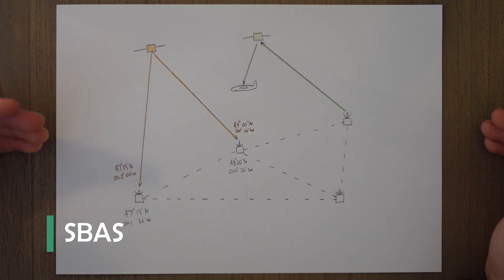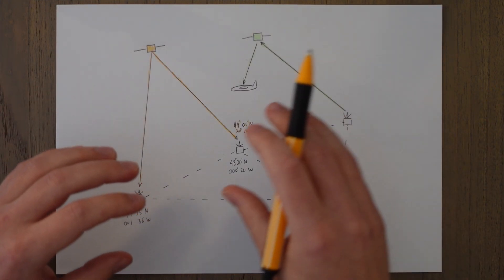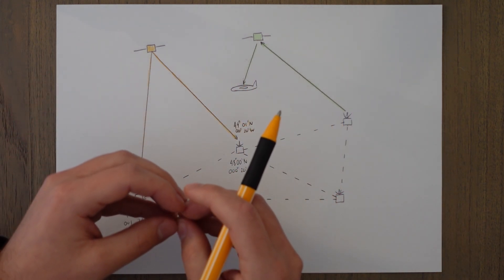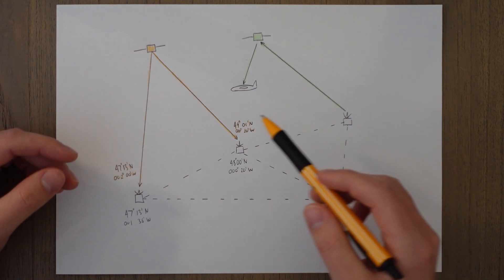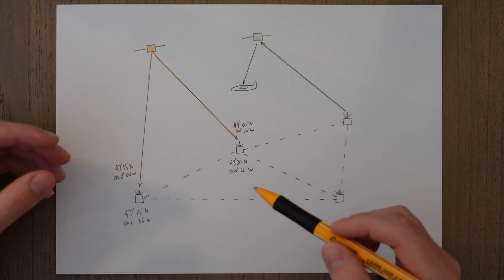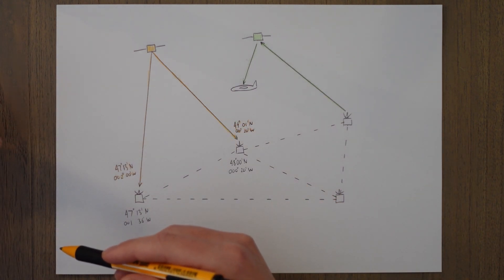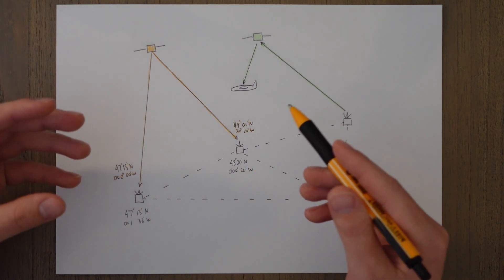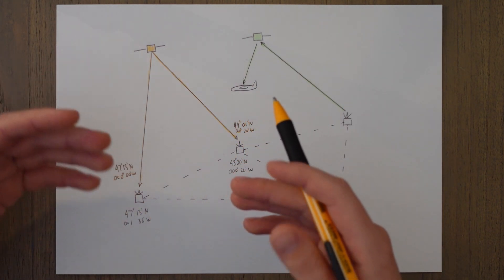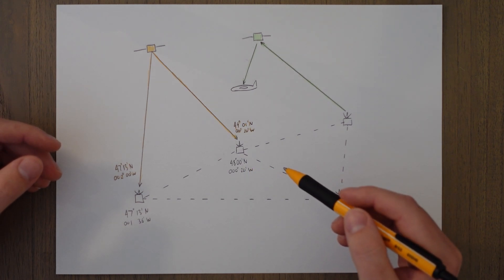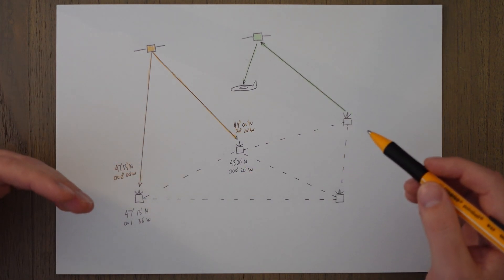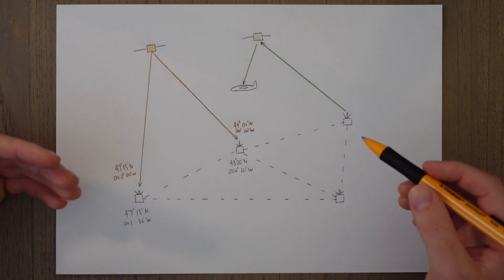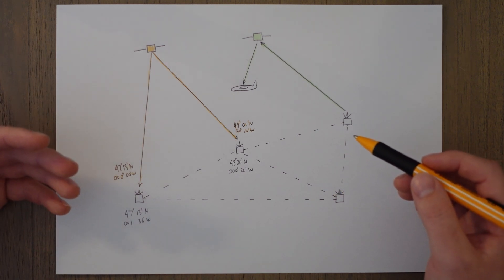A satellite-based augmentation system or SBAS uses a network of fixed ground stations. It basically takes the idea of GBAS and spreads it out over a large area. This network of ground stations takes periodic position fixes from satellites just like in GBAS. The information of what satellites are giving, what readings etc. is sent via a data link to a master station and this master station can compare and look at all the data and determine if any satellites are giving bad readings. If they are then a correction can be calculated.